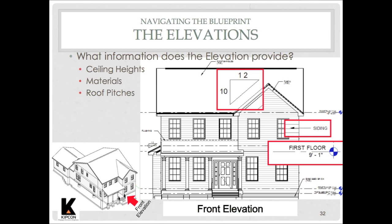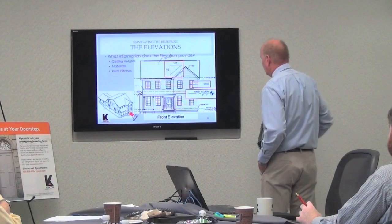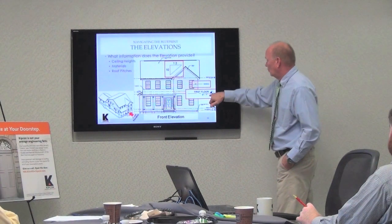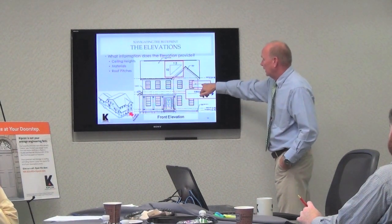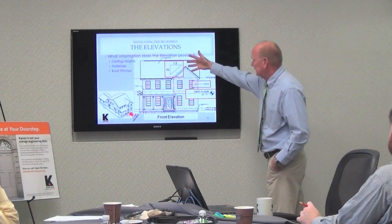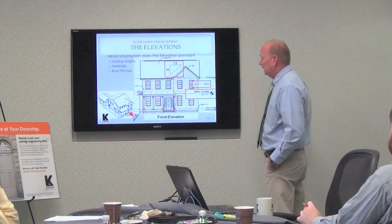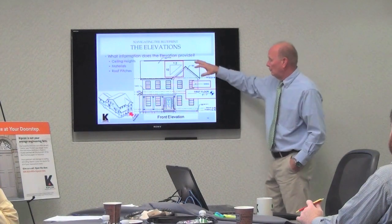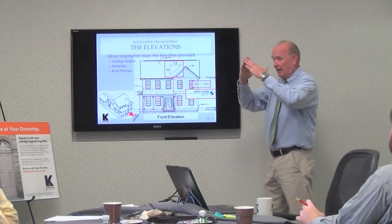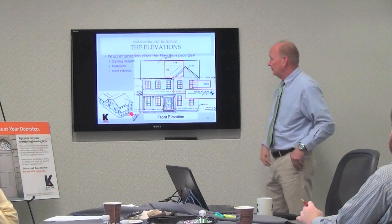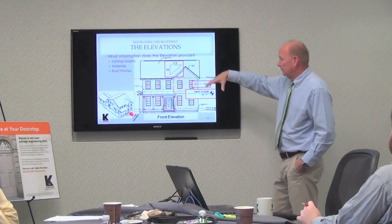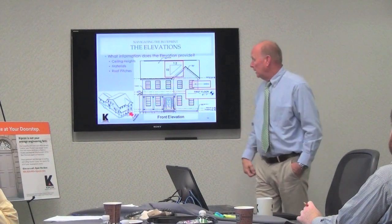Especially the ceiling heights. Here, nine foot one on the first floor, telling us the type of siding, giving us the pitch of the roof, how steep it is — all on the elevation pages.